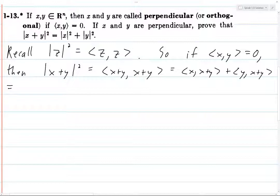So then we use linearity for each of these terms separately, we use linearity in the second entry. So we get inner product of x with x, plus inner product of x with y, plus inner product of y with x, plus inner product of y with y.